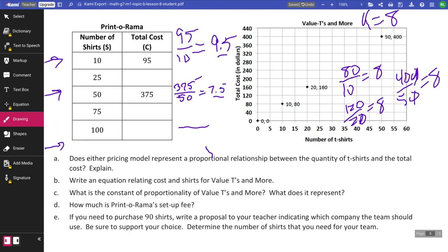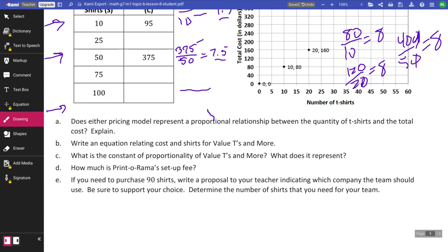Does either pricing model represent a proportional relationship between the quantity of t-shirts and the total cost explained? So yes. Print-O-Rama has a proportional rate of 8.